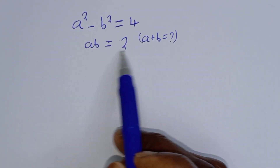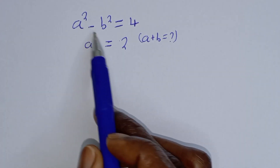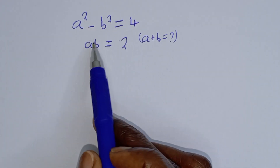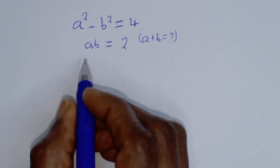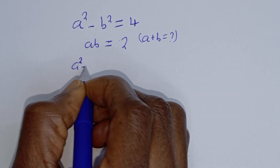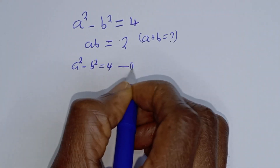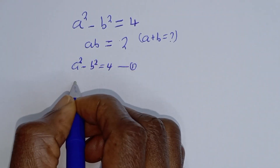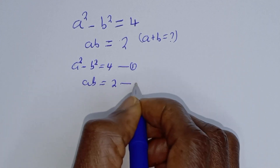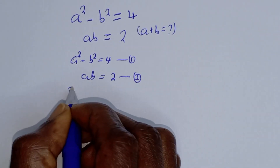Hello. How to solve for a plus b from this given Math Olympiad problem: a squared minus b squared is equal to 4, and ab is equal to 2. Solution: a squared minus b squared equals 4 — let's call this equation 1. Then ab equals 2 — let's call this equation 2.